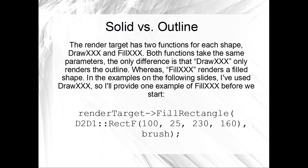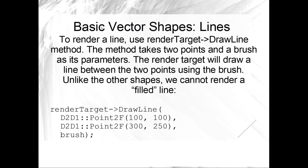All of the examples we're about to go through use Draw and some shape, but you've also got the Fill option. So instead of DrawRectangle, you could do FillRectangle. The only difference is that Fill draws the shape solid — filled in with color — whereas the Draw methods just draw the outline. Other than that they're exactly the same. All of the DrawShape and FillShape methods belong to the RenderTarget.